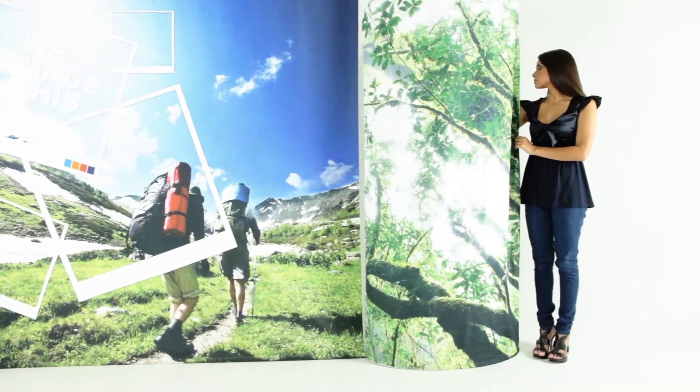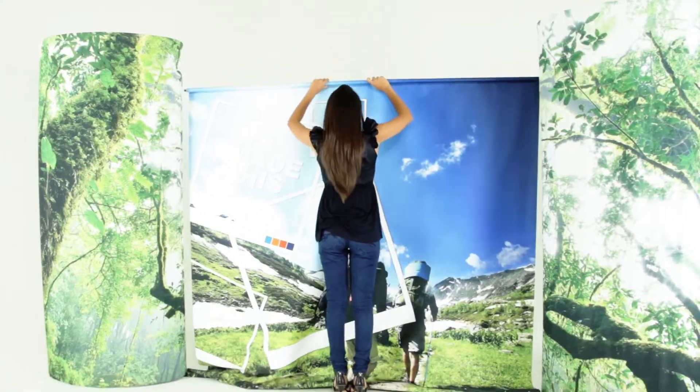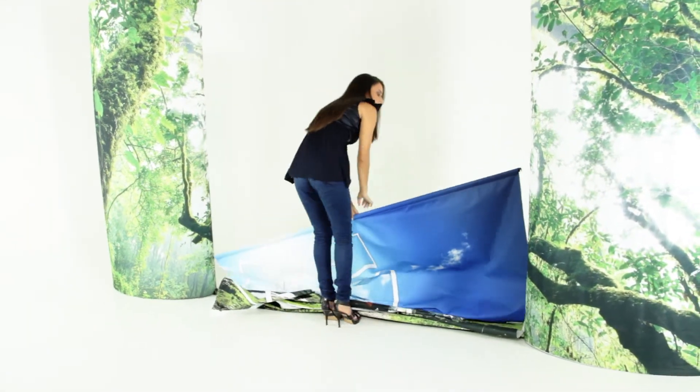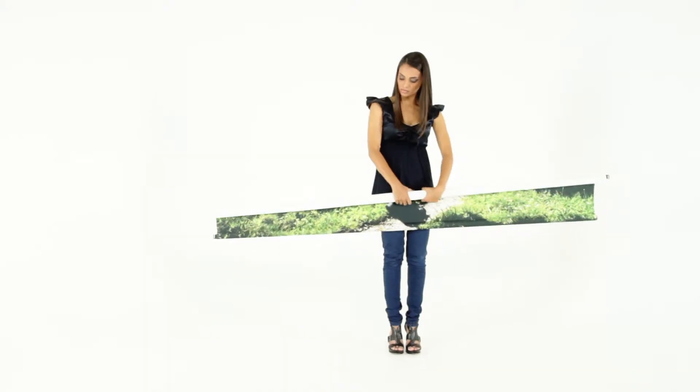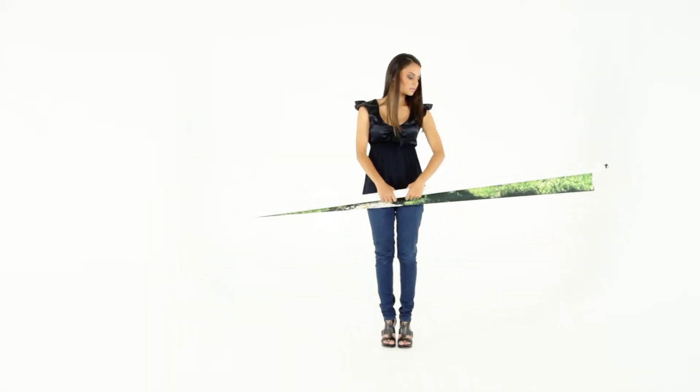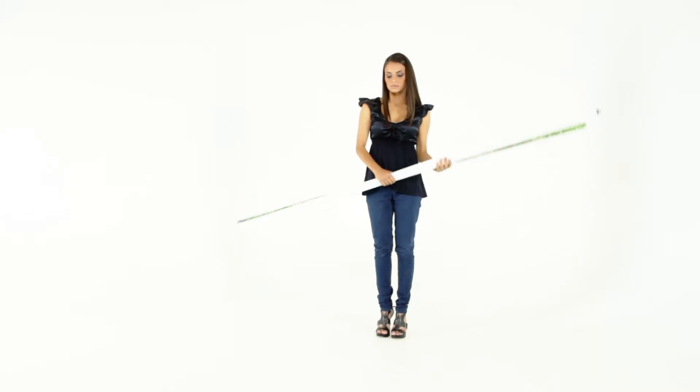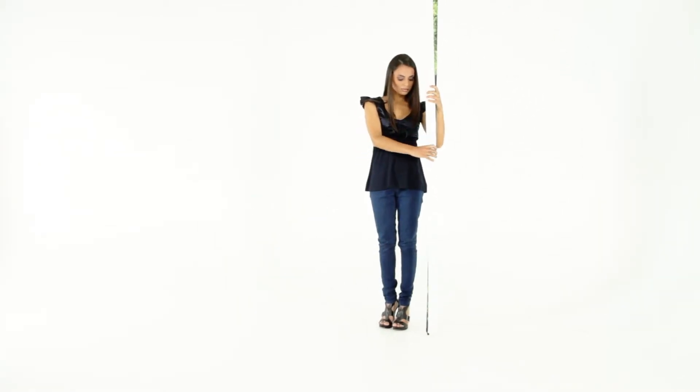Wind down the center pole of each structure. Unhook the top and bottom clips of the back wall. Roll up the back wall and pack away in the carry bag provided. Pack away both 360 degree wonder signs.